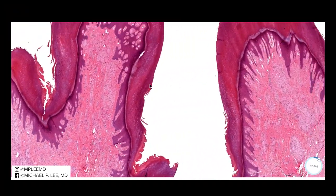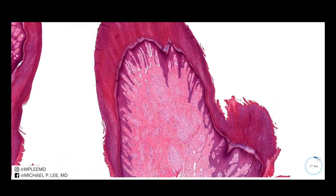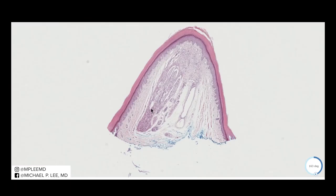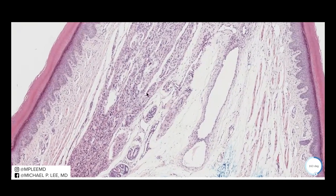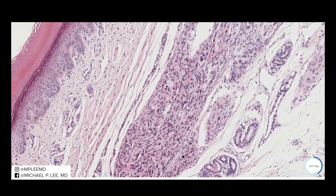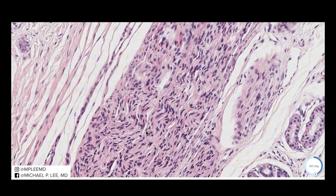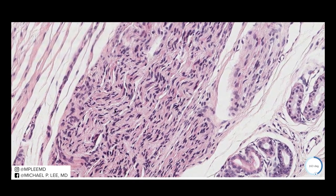We have another example here — a similar kind of picture. Orthohyperkeratosis; we can tell that we're on acral skin, and the central area here is pretty busy. That busy area again contains wavy nerve fibers, and here you can actually make out very nice wavy nuclei.